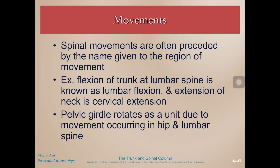Spinal movement is often preceded by the name of the region. If we want to talk about flexion of the trunk at the lumbar spine, we call it lumbar flexion — lumbar is the region, flexion is the movement. Extension of the neck is called cervical extension, not neck extension. Also, the pelvic girdle — included in the trunk — rotates as a unit due to movement occurring at the joints above and below it: the hip joint and the lumbar spine.